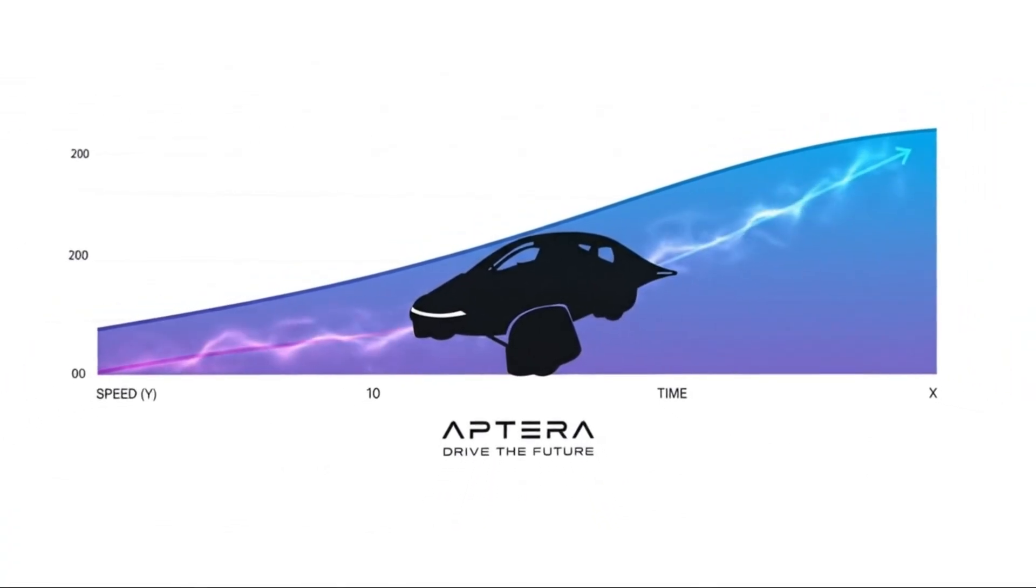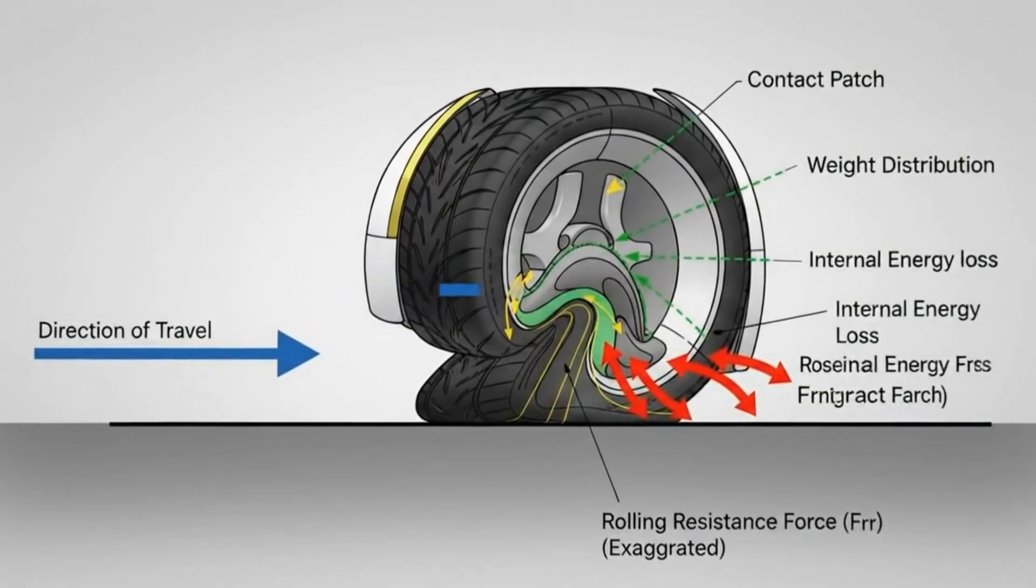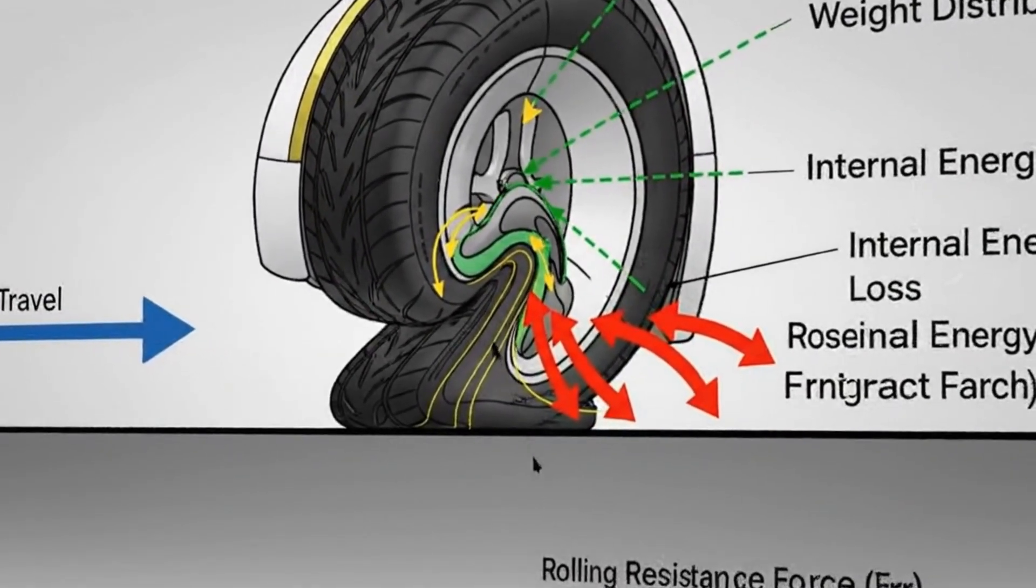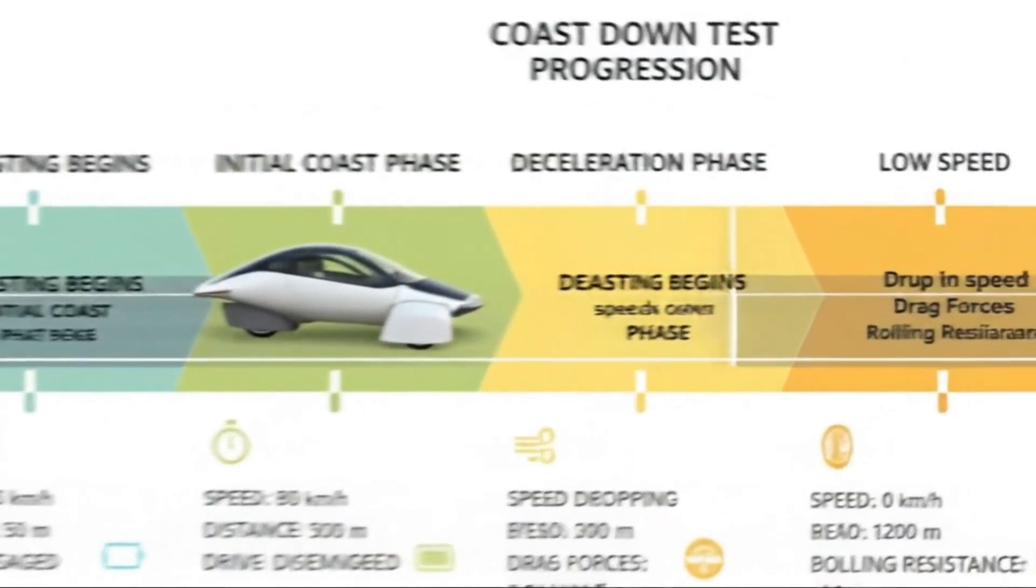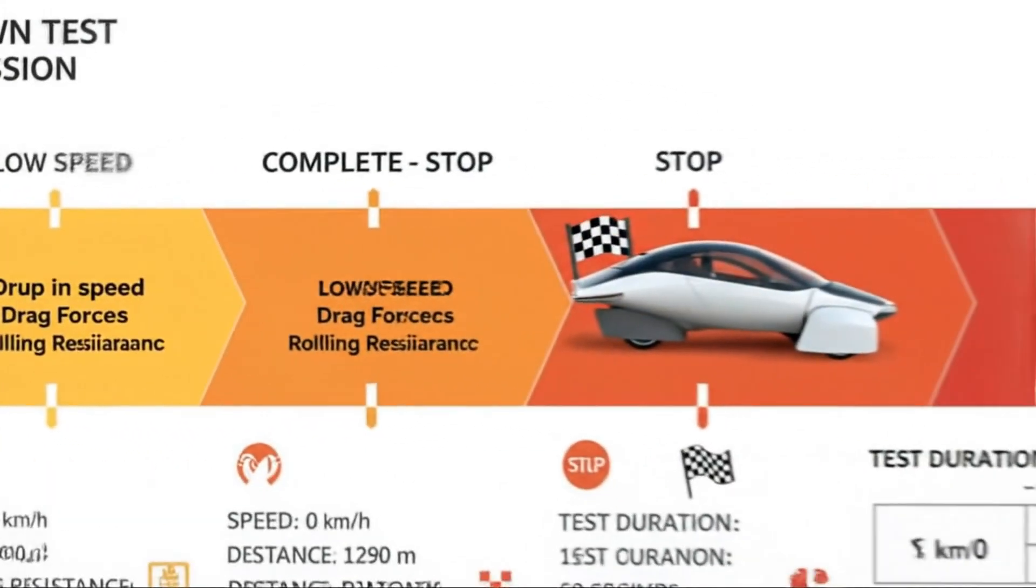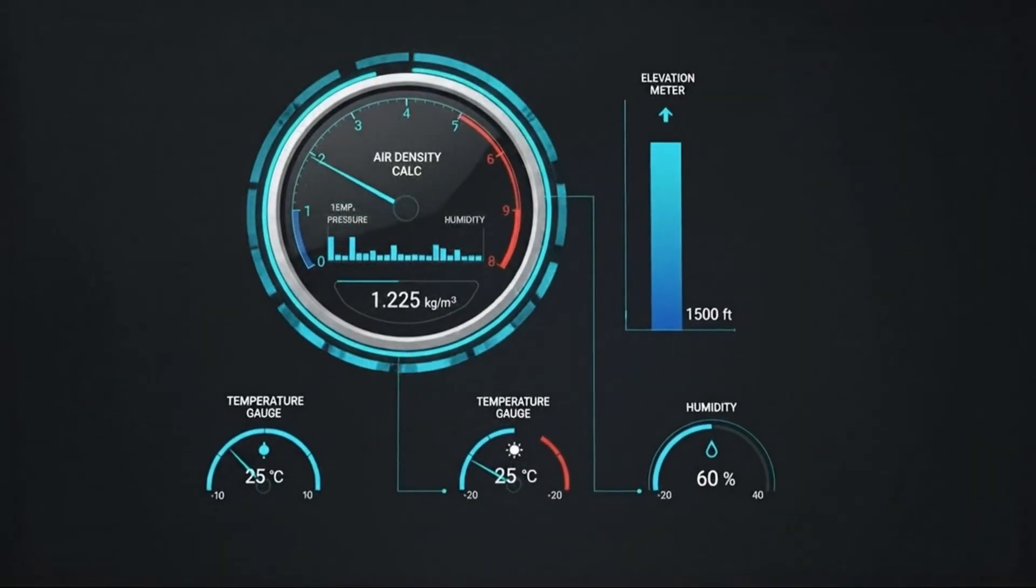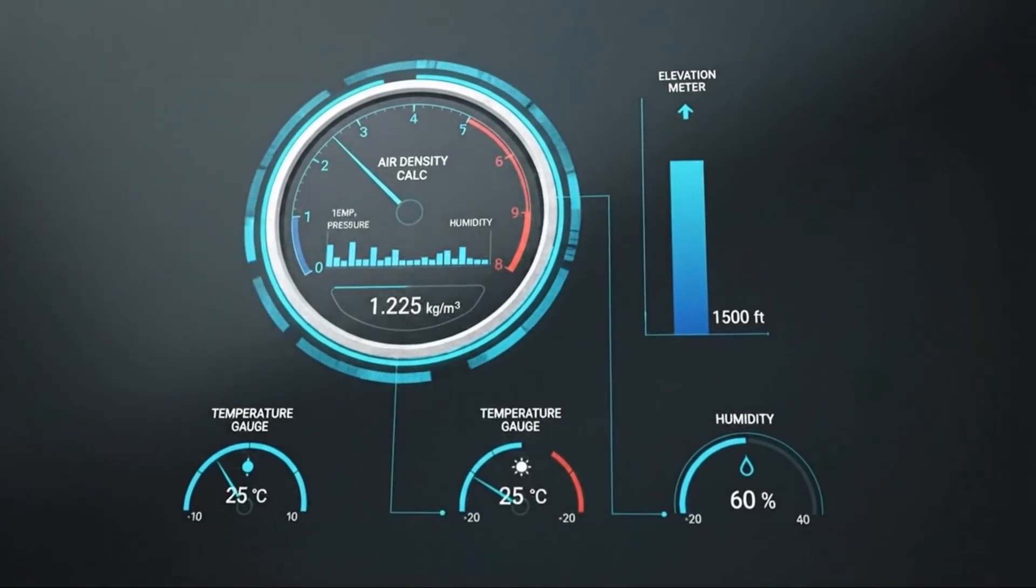What makes this approach so powerful is how each efficiency gain amplifies the others. Lower weight allows for a smaller battery. A smaller battery reduces weight further. Better aerodynamics reduce energy demand, making solar charging viable. Solar charging reduces dependence on the grid altogether. It's a cascading effect where every optimization strengthens the next.